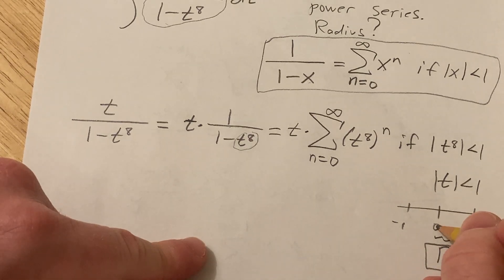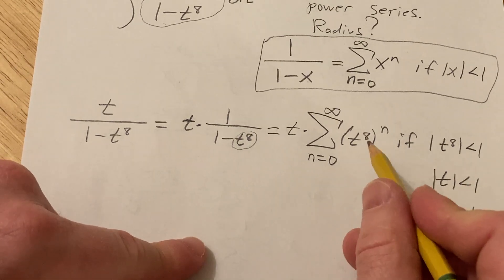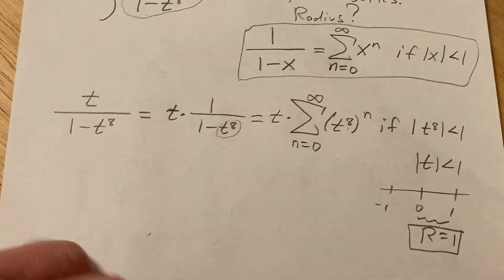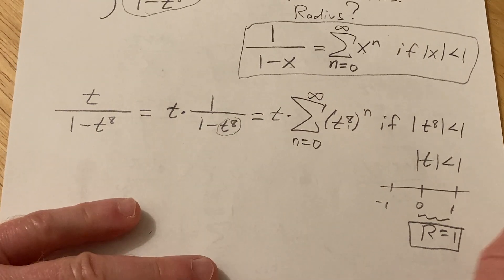So that basically means your interval is going to look something like this and so your radius is going to be one. The radius is the distance from the center to one of the endpoints. This is a power series centered at zero, so easy way to get the radius.